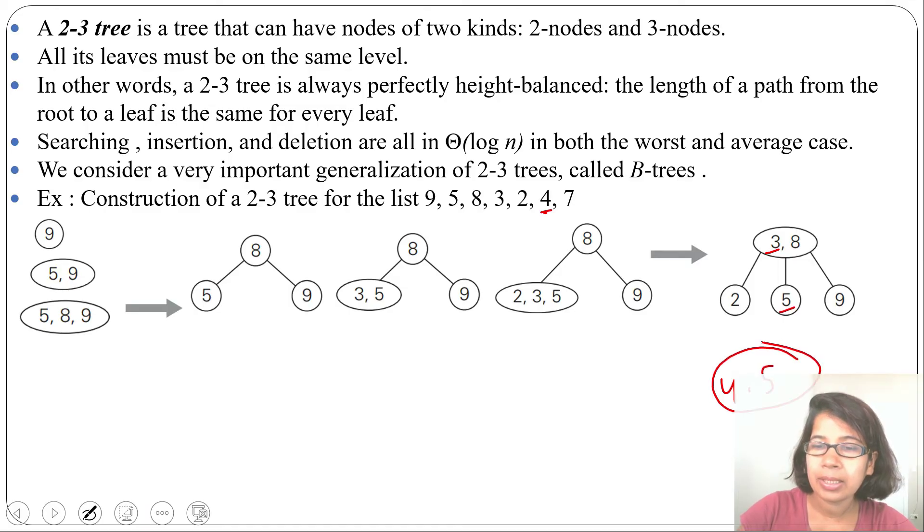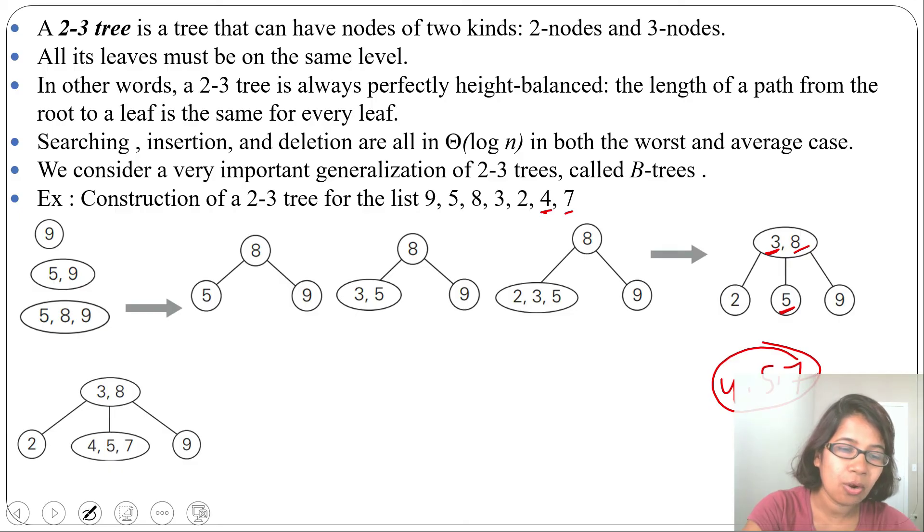Next we will insert 7. 7 is greater than 3, greater than 5, less than 8. So 7 will also insert here. Now this node will contain 3 values: 4, 5, 7. All are greater than 3, less than 8, so in between 3 and 8. Here there are 3 nodes, so we will split it.